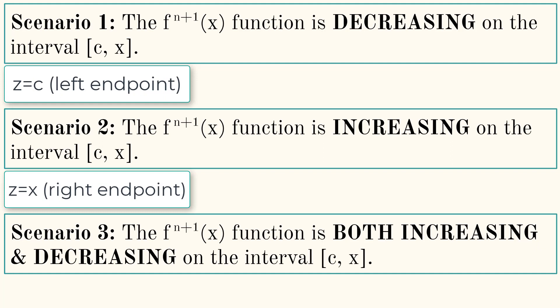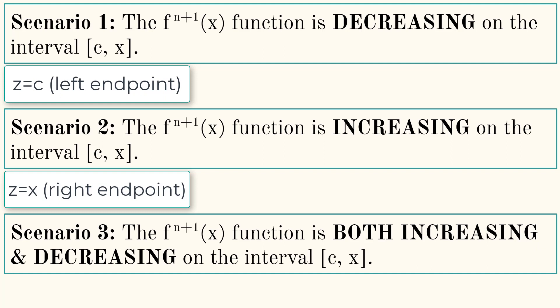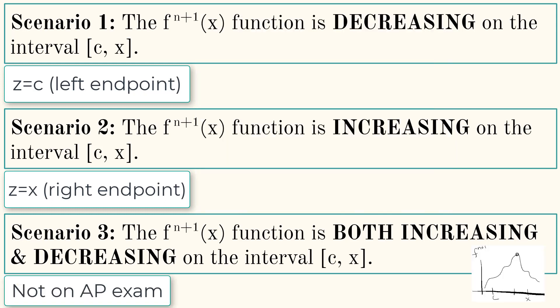In your third scenario, what if your function is doing something like this, where your maximum is somewhere in between the endpoints? Fortunately, this scenario has never popped up on a past AP exam, so we won't need to go into detail on scenario 3.